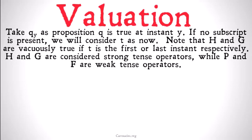We're going to do something called evaluation. Take q_y as proposition q is true at instant y. If no subscript is present, we're going to consider t, the time, as now. Note that H and G are going to be vacuously true. Hopefully there's a video up that I recently published about something being vacuously true if you don't know what that means. That means if t is the first or last instant, respectively. Basically, if we have the first instant, anything is going to have always been. And if we have the last instant, anything is going to always be, because there's no instance in the future. H and G are going to be considered strong tense operators, while P and F are considered weak tense operators.